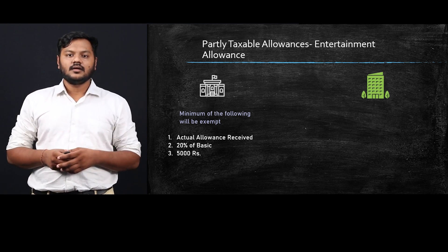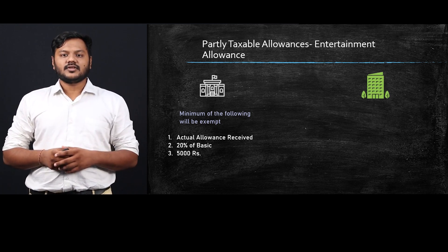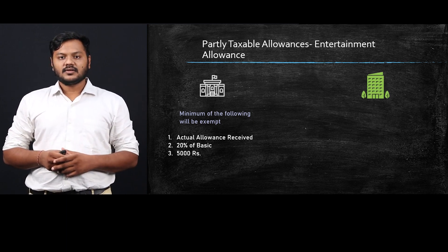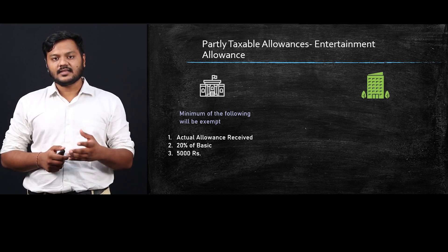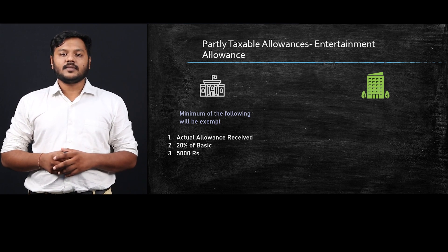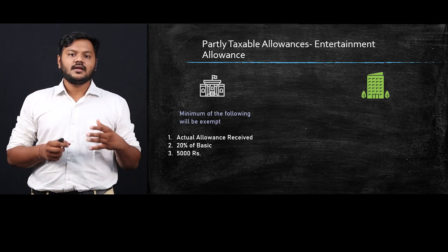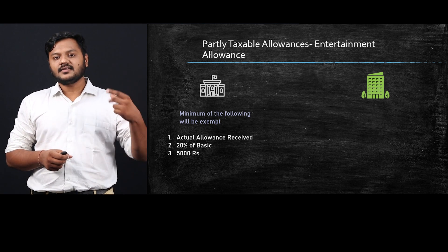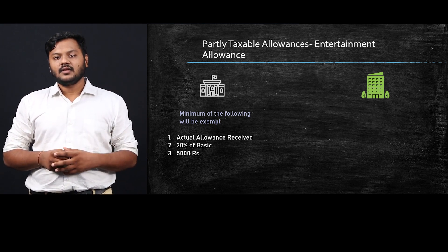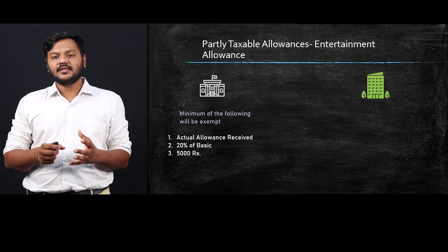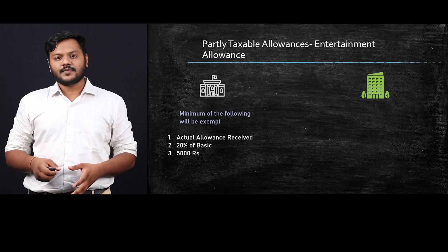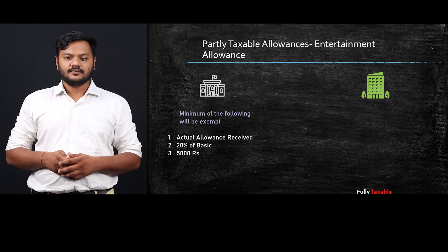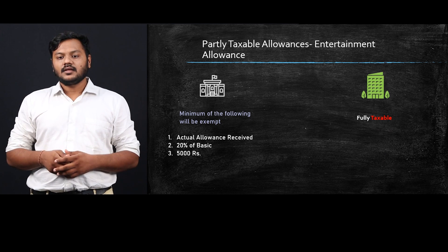Let me give an example. Say your salary is ₹1,00,000 and the entertainment allowance provided is ₹10,000. Condition one: actual allowance received = ₹10,000. Condition two: 20% of basic salary = ₹20,000. Condition three: ₹5,000 flat. The lowest of the three is ₹5,000, so ₹5,000 is exempt and the remaining ₹5,000 is taxable. This rule applies to government employees.